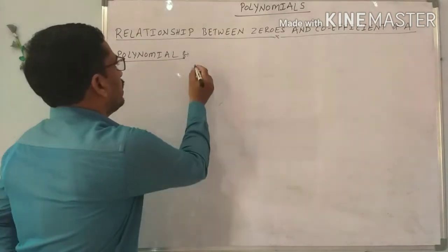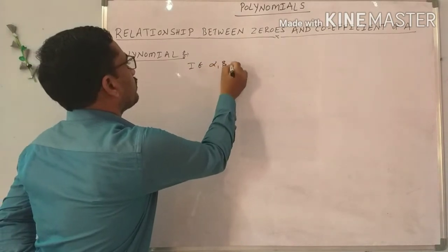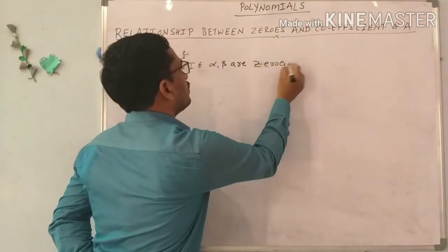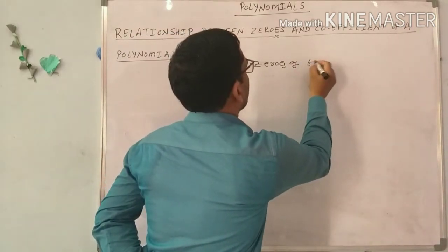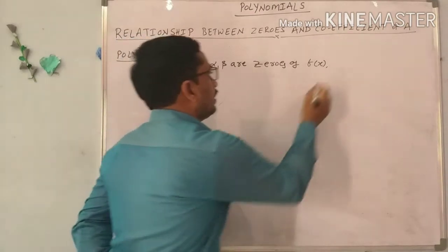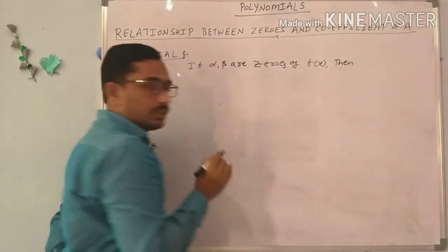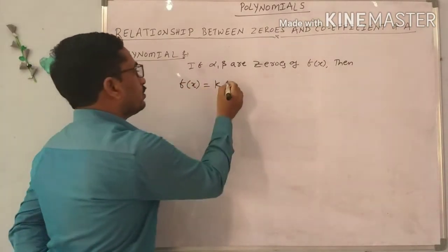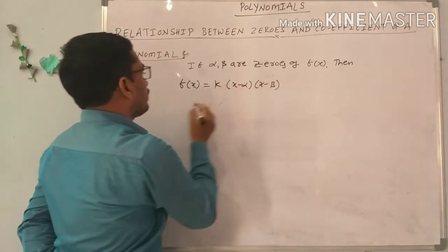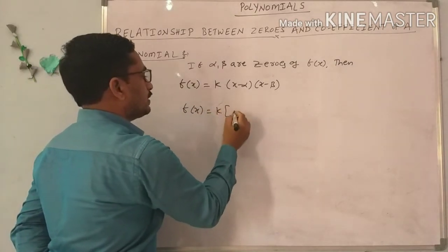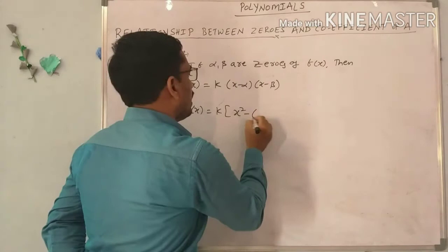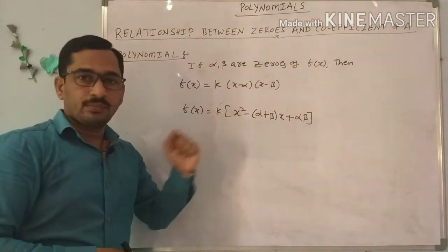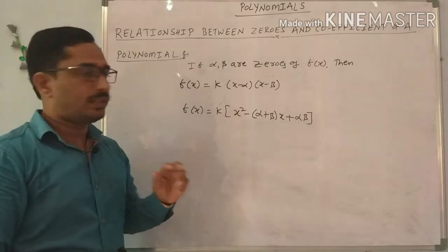We also have one more relation. If alpha comma beta are the zeros of a quadratic polynomial F of X, then F of X is written as K into X minus alpha into X minus beta, which equals K into X squared minus alpha plus beta into X plus alpha into beta. This formula is related to the second bit problems in exercise 3.3.